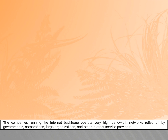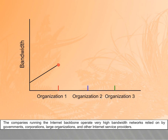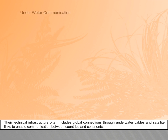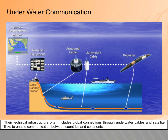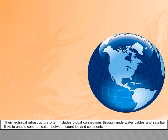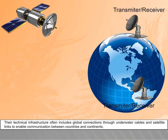The companies running the internet backbone operate very high bandwidth networks relied on by governments, corporations, large organizations, and other internet service providers. Their technical infrastructure often includes global connections through underwater cables and satellite links to enable communication between countries and continents.